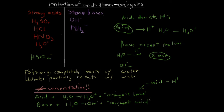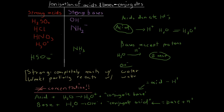The conjugate acid of a given base is equal to the base plus a proton. So if we have an NH2⁻ ion — a base — and we want its conjugate acid, we add a proton to get NH3. So NH3 is the conjugate acid of NH2⁻. In the same way, if NH3 acts as an acid, its conjugate base is NH2⁻ — it lost one proton.